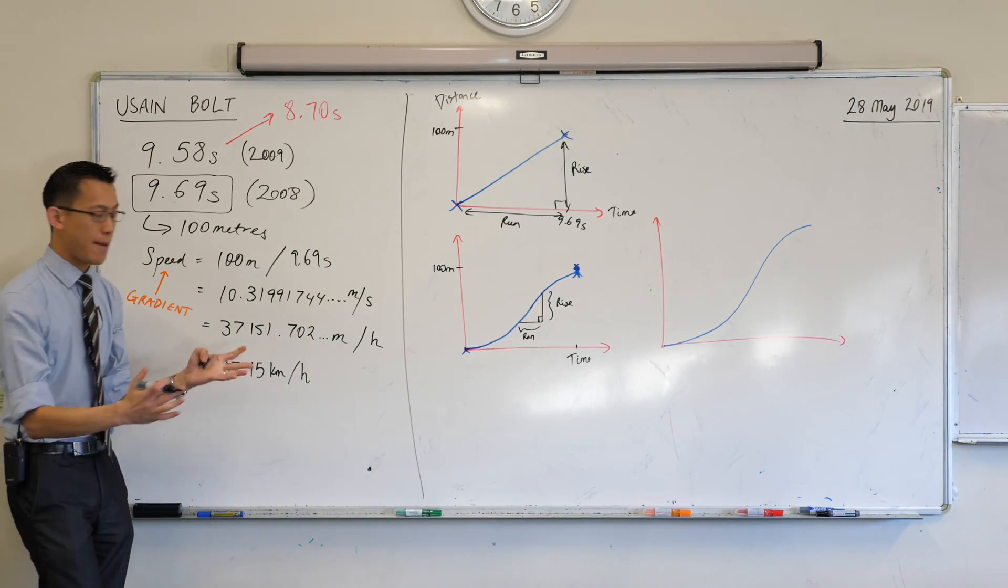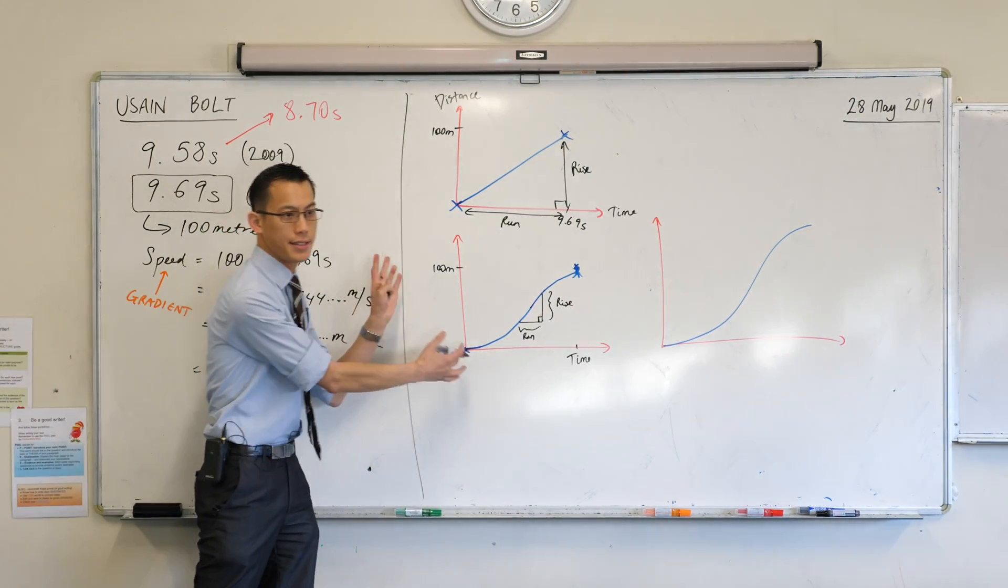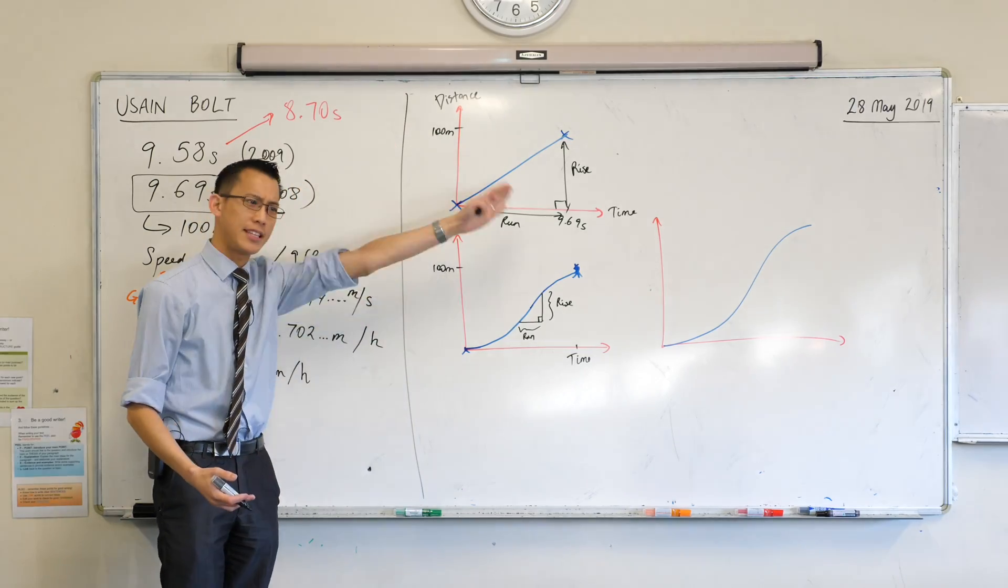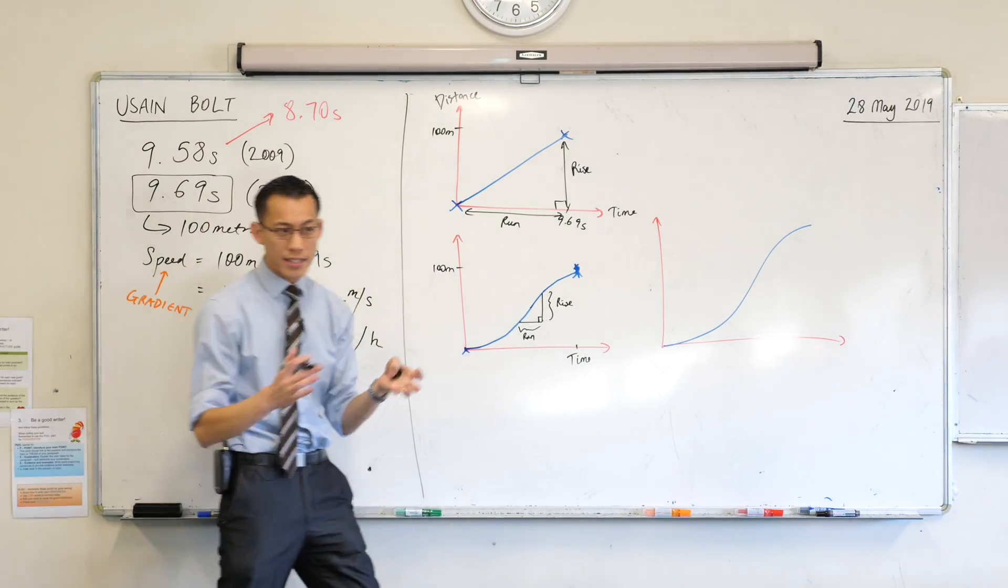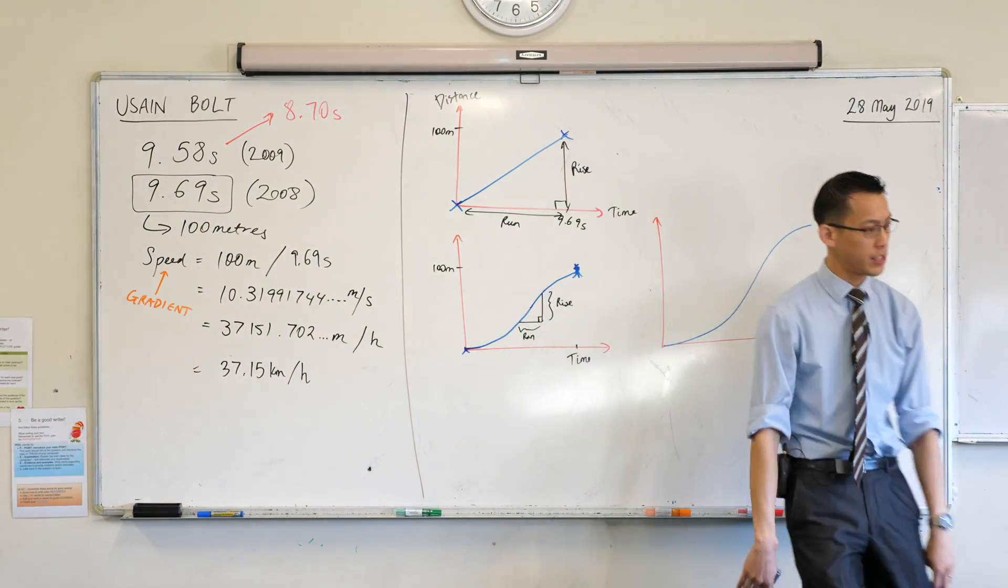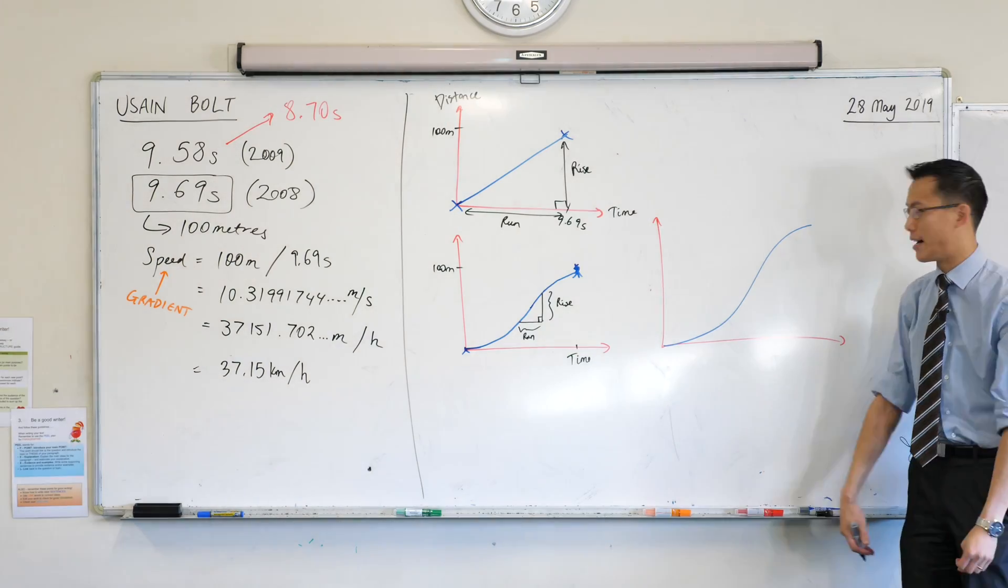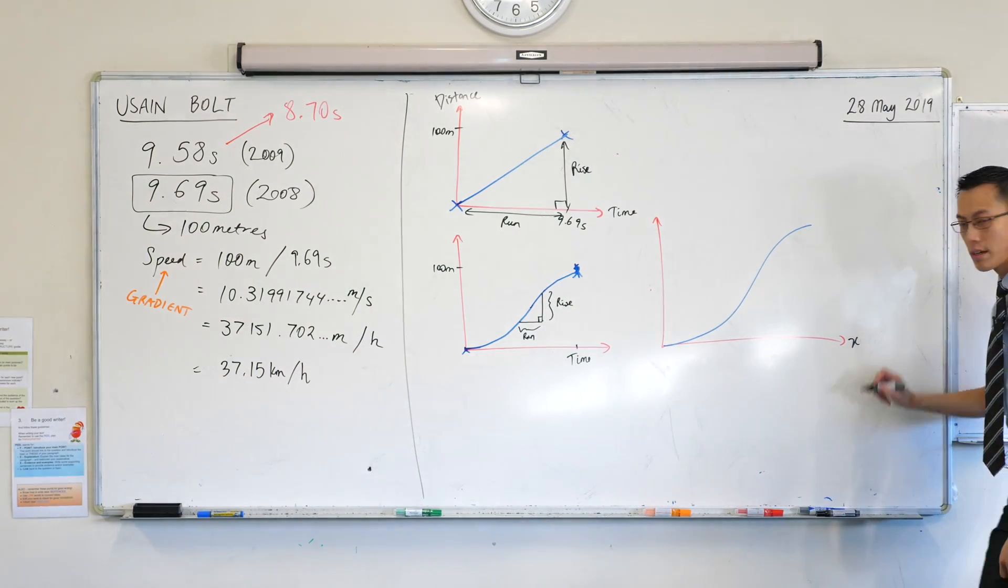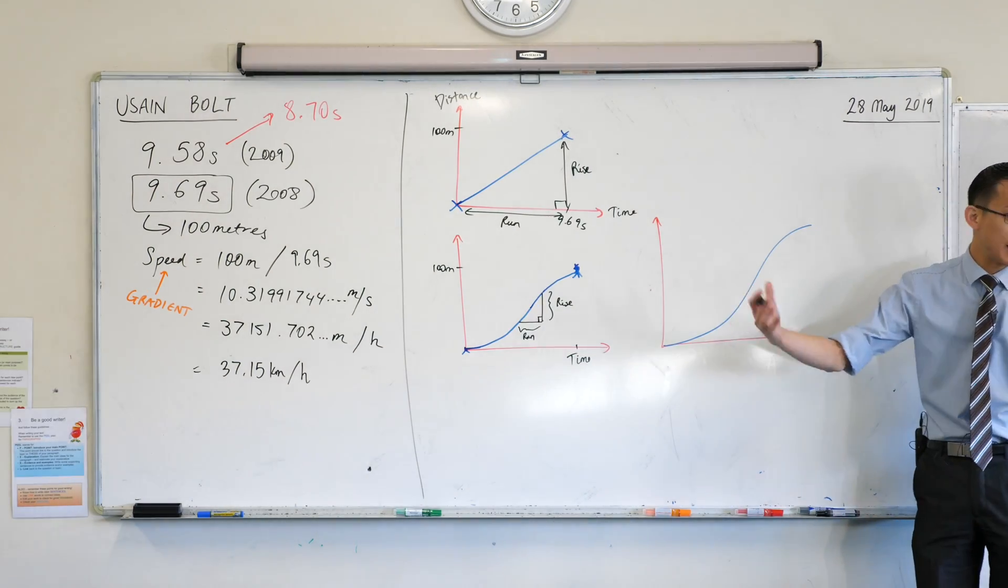Here's my new plane, same graph, but instead of thinking about distance and time, which is just one specific example, these axes literally could be anything. So let's go back to the way we normally call the Cartesian plane. We normally call this guy x, so that it can indicate anything.